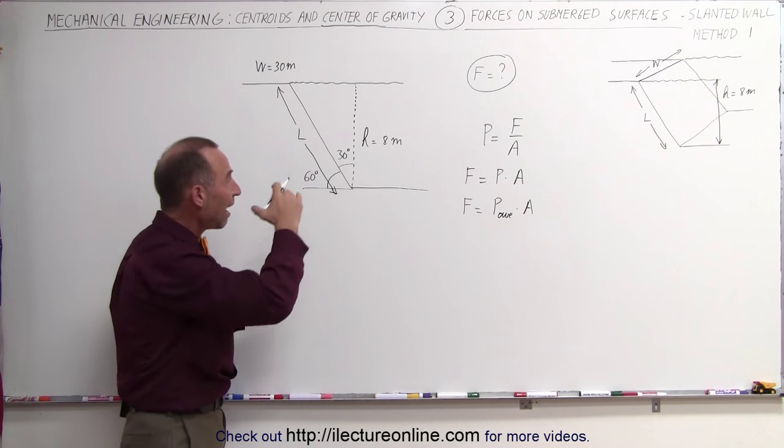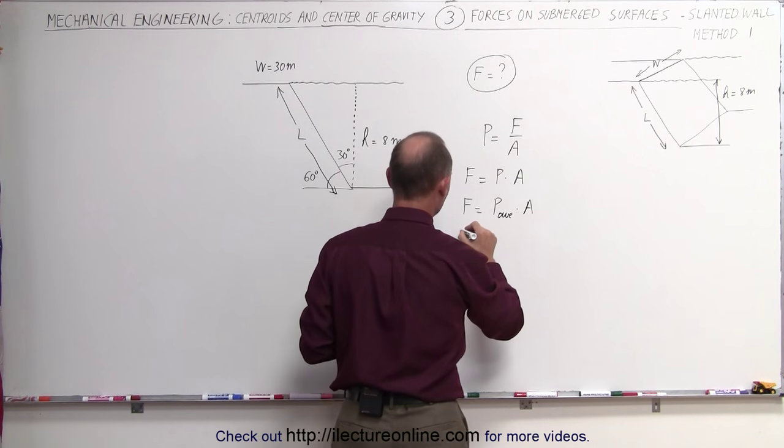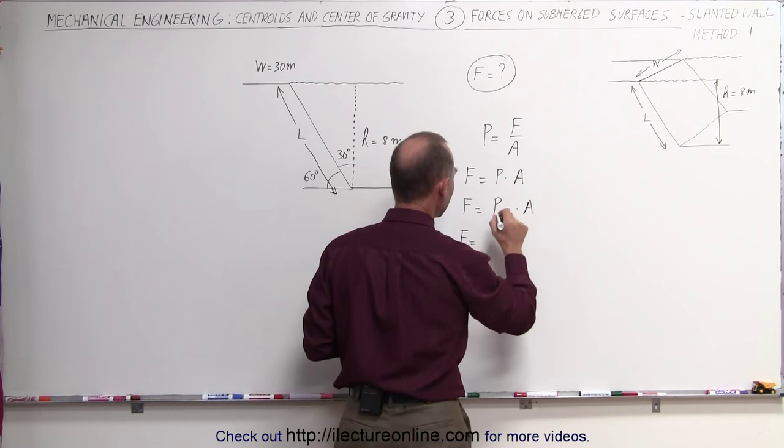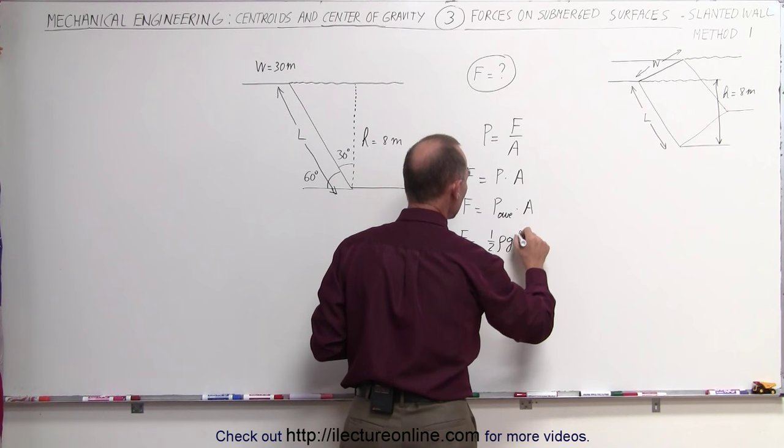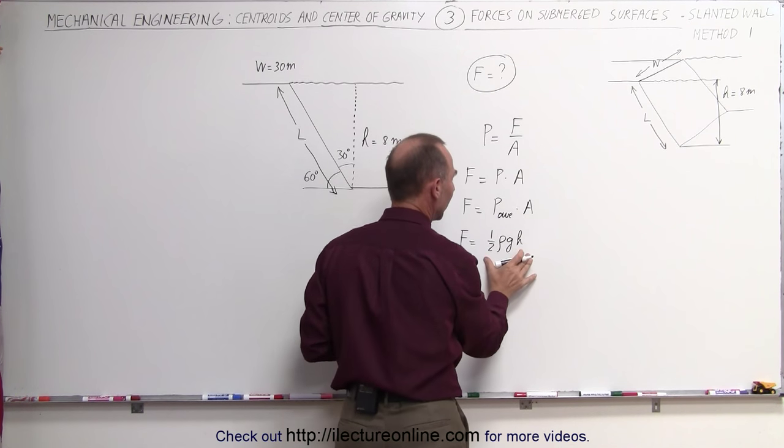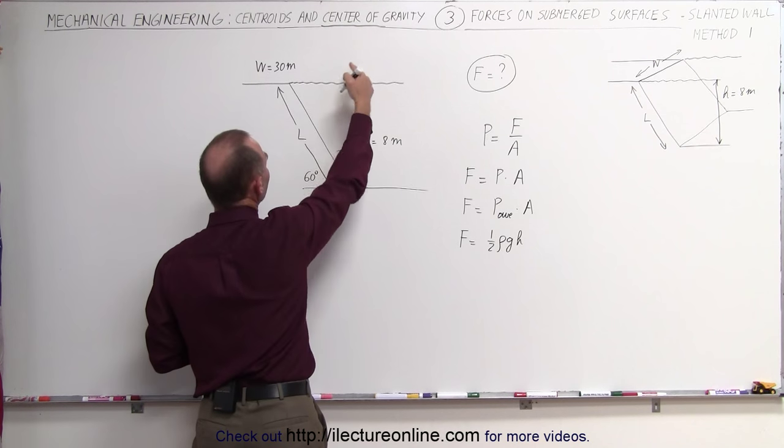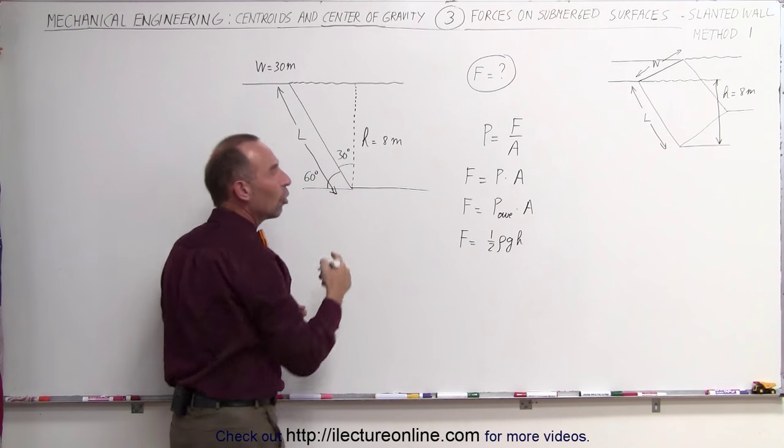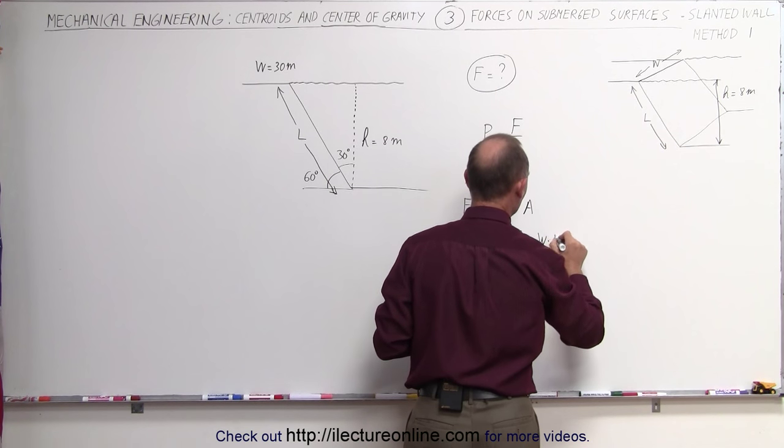Now the average pressure would be the halfway point at the depth of 4 meters. So we can say here that the force would be equal to the average pressure would be one-half rho GH, H being 8 meters, so half of that is 4 meters times the area. Now the area would be the width times the length, the sloped length of the dam. So the area would then be the width times the length.